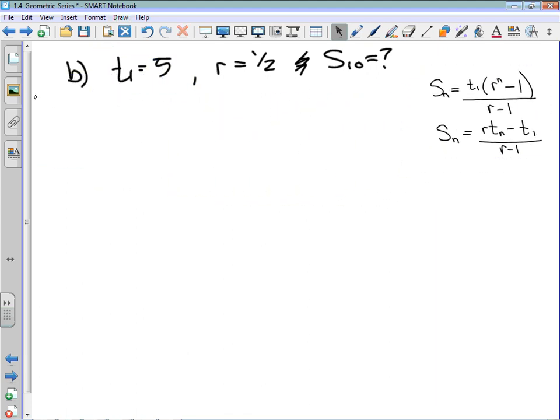Looking at the information given, I know term 1, I know the common ratio, and because I'm finding the sum of 10 terms, I know that n equals 10. So the sum of 10 terms equals term 1, which is 5, times the common ratio—I'm going to use a bracket—1/2 to the power of 10.